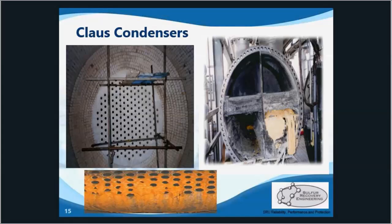Moving on to condensers, starting with the waste heat boiler — it cools the reaction furnace temperature down to about 350 degrees Celsius and produces high pressure steam. The interstage condensers cool the process gas headed to the next catalytic stage and condense the produced sulfur vapor into a liquid. These do low pressure steam generation, typically around 50 PSI, and that steam is used for heat tracing.